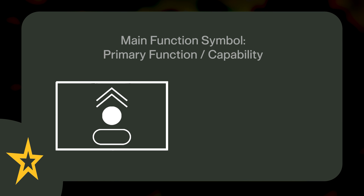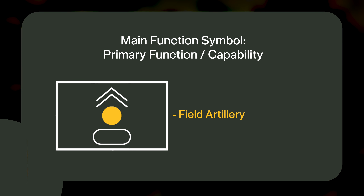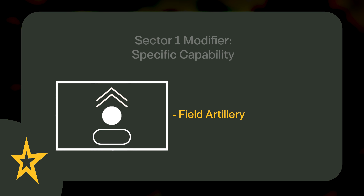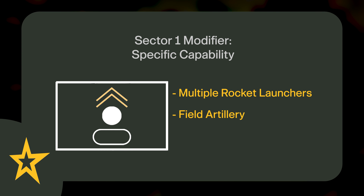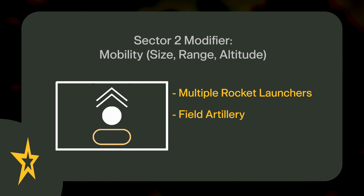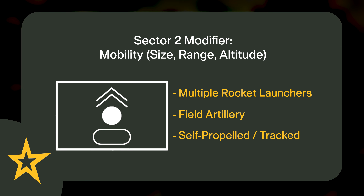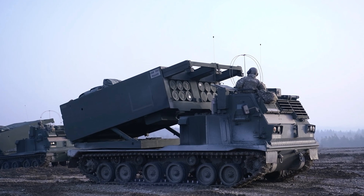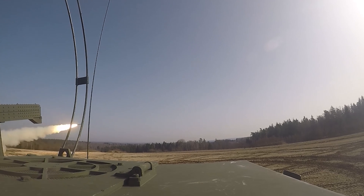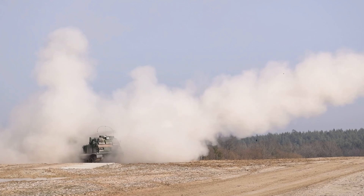So let's look at an example. Here we have a symbol for a field artillery unit. We know the unit's primary function is field artillery because of its main function symbol in the center. When we look at the sector 1 modifier on the top for its specific capability, we see that the unit can also fire multiple rocket launchers. We then look at the sector 2 modifier on the bottom, and now know that the unit moves on self-propelled tracked vehicles. So all together, we have a field artillery unit with self-propelled multiple rocket launcher capabilities, such as the M270 Multiple Launch Rocket System, or MLRS.